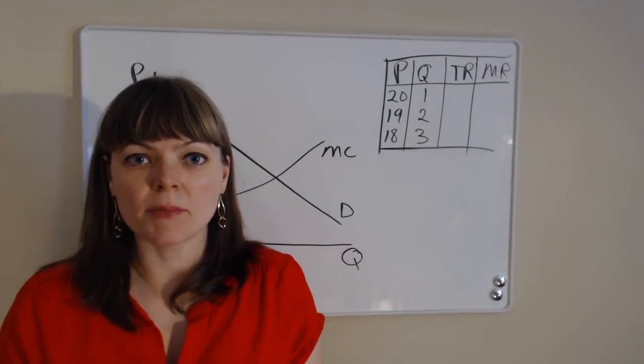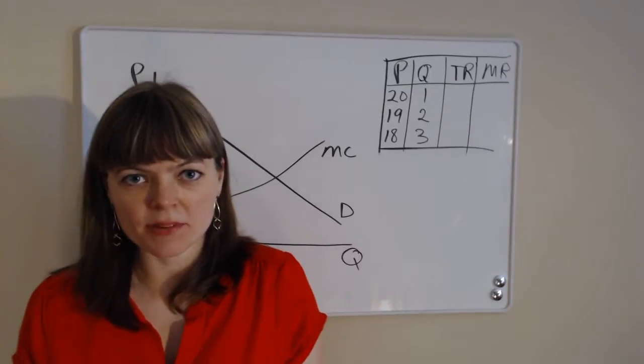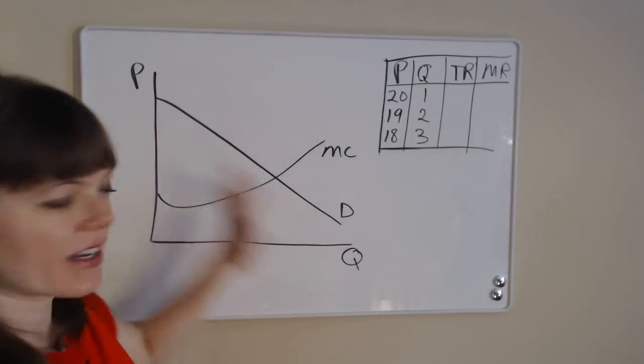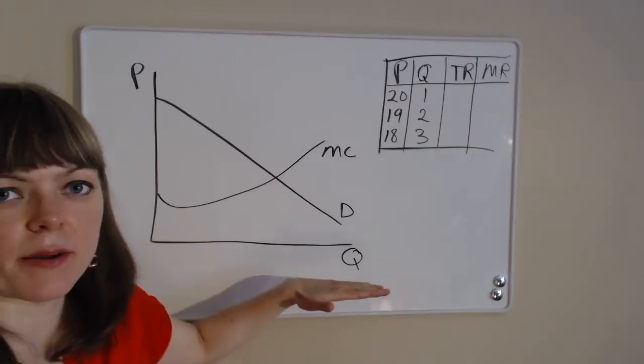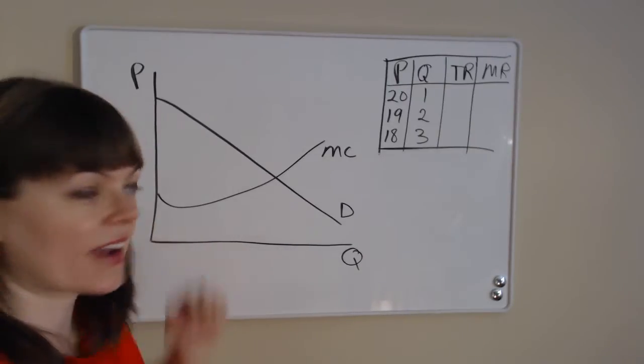Hi, I'm explaining the Monopoly model, and to start our Monopoly model, we're going to have a supply and demand curve diagram. So we've got the quantity on the x-axis, we've got the price on the y-axis.